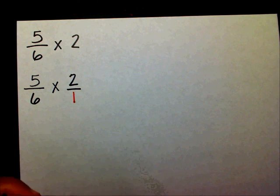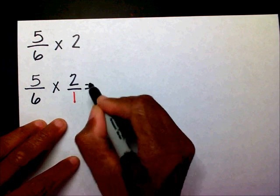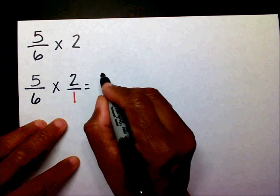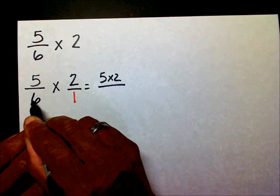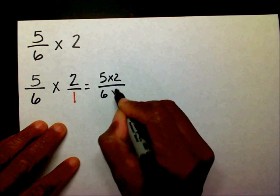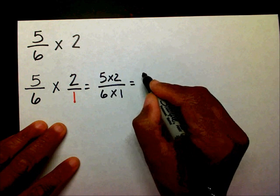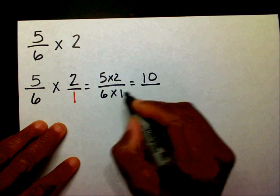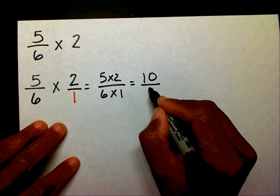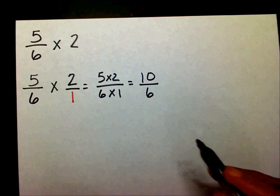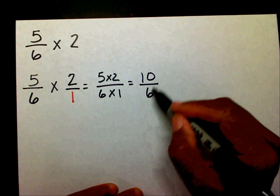Now that I've done that, I can just multiply across. I'm going to say 5 times 2, and I'll multiply 6 times 1. So 5 times 2 is 10, and 6 times 1 is 6. I have an improper fraction here.